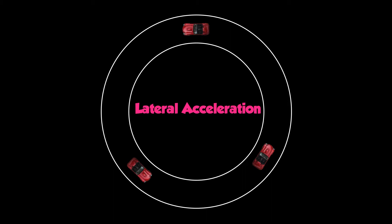To find the lateral acceleration, they take a car and put it on what's called a skid pad. The skid pad is a large paved blacktop with a circular path laid out. They drive the car around the circle faster and faster and use onboard instruments to measure the lateral acceleration.